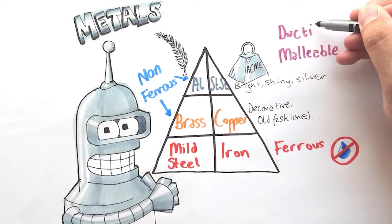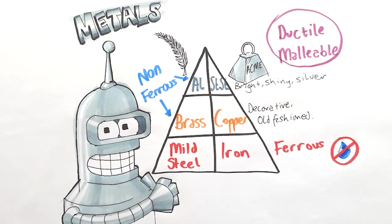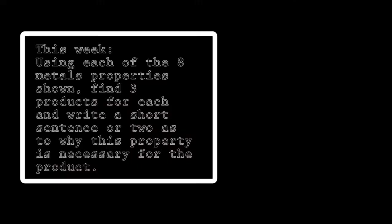So that's a very quick run through on metals, both ferrous and non-ferrous. What I'd like you to do this week, using each of the eight metals properties shown, find three products for each and write a short sentence or two as to why this property is necessary for the product.